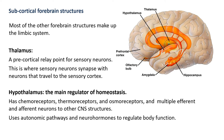The hypothalamus is our main regulator of homeostasis, just to the left and below the thalamus. As we already know, it has chemoreceptors, thermoreceptors, and osmoreceptors, and it also has multiple efferent and afferent neurons to other central nervous system structures. There's a lot of interaction between the hypothalamus and other parts of the brain. To have this communication, it uses autonomic pathways, and it also uses neurohormones to regulate our endocrine system.